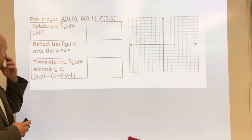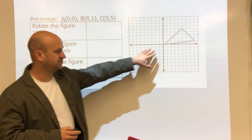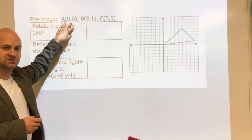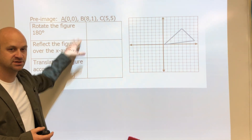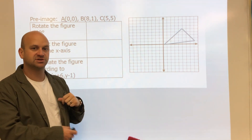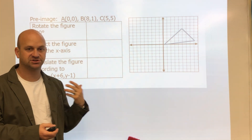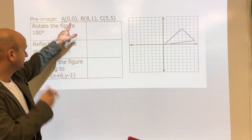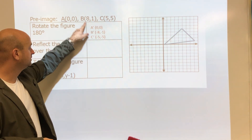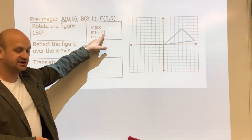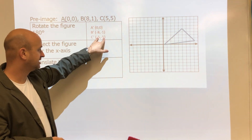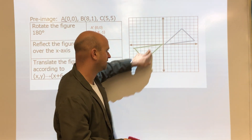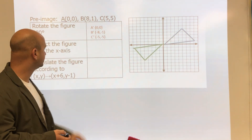Here's a problem where they give you the pre-image and want you to graph it. We graph these points, then the first transformation is to rotate 180 degrees. You can turn your paper or use the rule — in this case, we change the signs of both the x and y coordinates. So (0,0) stays (0,0), (8,1) becomes (-8,-1), and (-5,5) becomes (-5,-5). We graph that triangle.